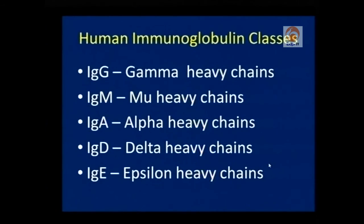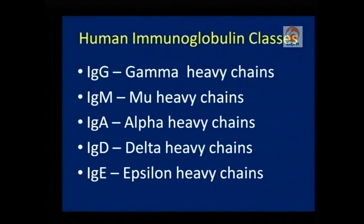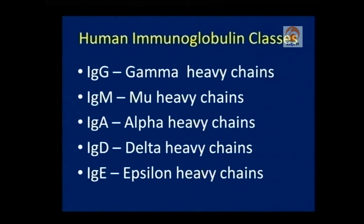Immunoglobulins are of five different types: IgG, IgM, IgA, IgD, and IgE. The classification is based on heavy chains — IgG has gamma heavy chains, IgM has mu heavy chains, IgA has alpha chains, IgD has delta chains, and IgE has epsilon chains. These different immunoglobulins have different functions and attributes.